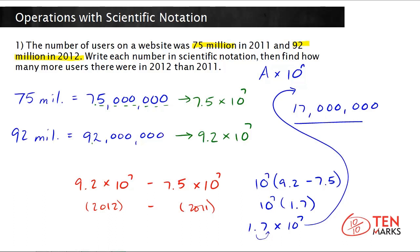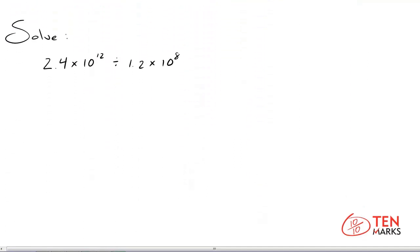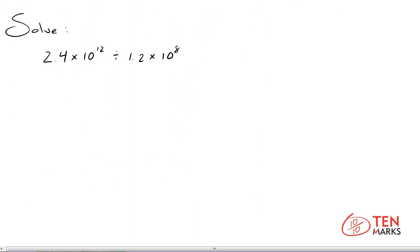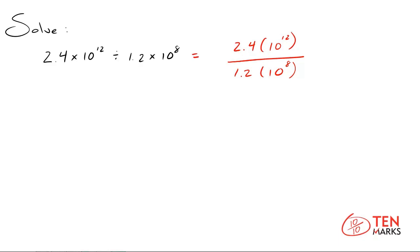Let's solve another problem together. Solve the following: 2.4 times 10 to the 12 divided by 1.2 times 10 to the 8. I'm going to rewrite it in a form that makes it easier to solve. I've rewritten this division problem — I've replaced the multiplication symbol with parentheses, which doesn't change the value. The factor becomes a coefficient multiplied by a power of 10, both in the numerator and the denominator.